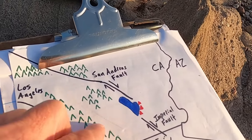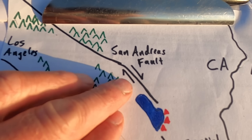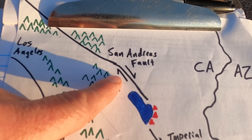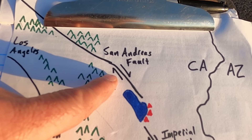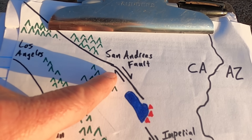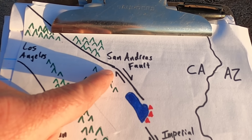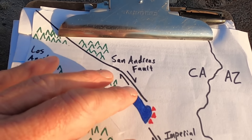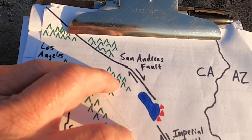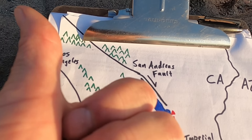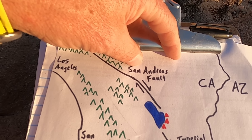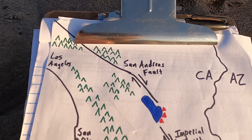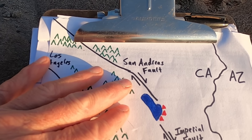The San Andreas Fault is a transform plate boundary — a strike-slip fault. So rather than moving up and down, it mostly has side-to-side motion. It's what we call a right lateral strike-slip fault. If you were to stand on one side and look across, things would over time appear to shift to your right. In reality, the Pacific Plate — the western side — is moving much faster to the northwest than the relatively stationary North American Plate.